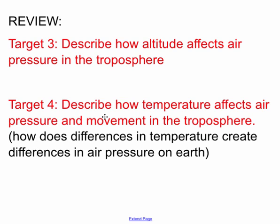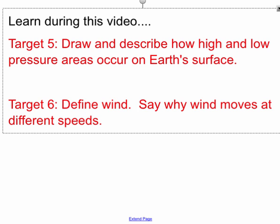And then Target 4, describe how temperature affects air pressure and movement of air in the troposphere. In other words, when air is heated, what does it do? When air is cooled, what does it do? If you have air that is leaving the surface, what type of pressure will that cause? High pressure or low pressure? Got to mentally be thinking of that before we get to the new info.